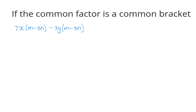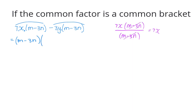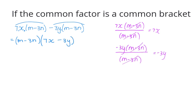Sometimes the common factor is a bracket. In this example there are two terms — it's always important to count the number of terms. The first term is 7 times x times the bracket, and in the second term it's minus 3 times y times the bracket. The inside of the brackets are exactly the same, so m minus 3n is the common factor. You put that in front of the bracket, take out the bracket, and the remaining term in the bracket is 7x minus 3y. What you're actually doing is dividing the bracket m minus 3n into the first term and into the second term.